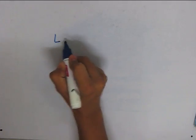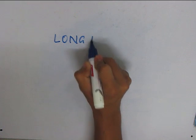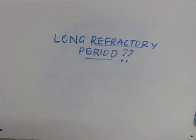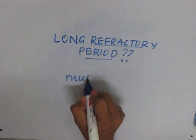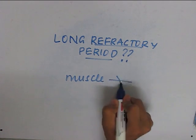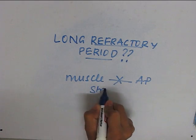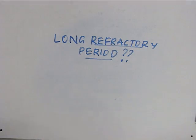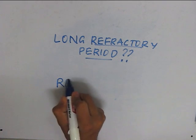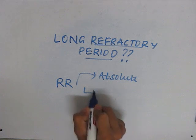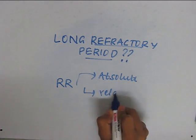Now I will deal with some of the important properties of the heart. The first one is the long refractory period. The refractory period is a period during which the muscle does not evoke an action potential, no matter how strong the stimulus is. The refractory period is usually divided into two parts: the absolute refractory period and the relative refractory period.